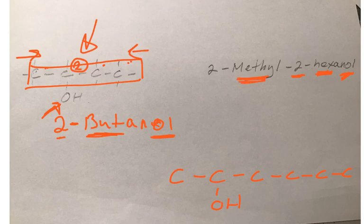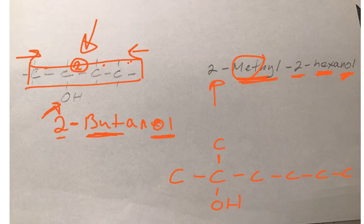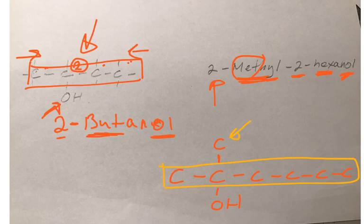But we also have a methyl group, and that methyl group is on carbon number two also. Meth means one carbon, and YL means it's a branch hanging off the side. So we're going to put a one-carbon branch hanging off the side of the parent. Please be very careful when putting your lines in — carbon forms four bonds and hydrogen forms one bond. Make sure carbon always has four bonds, no more, no less.